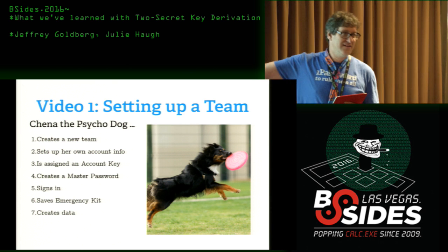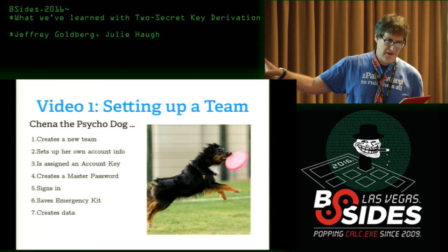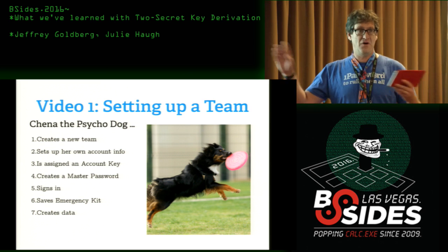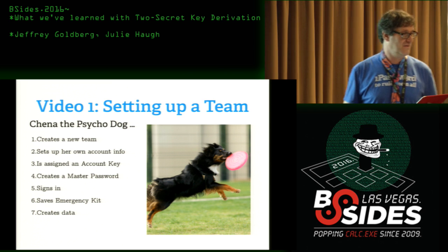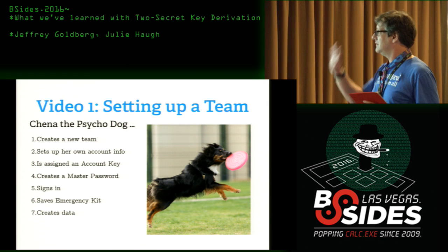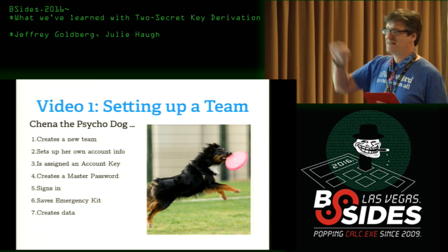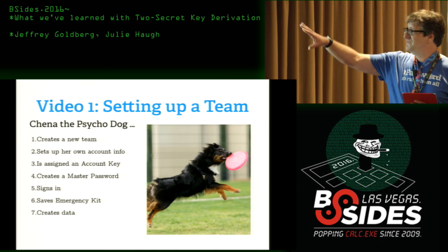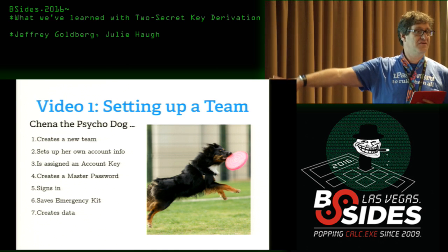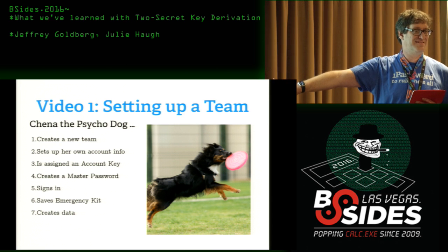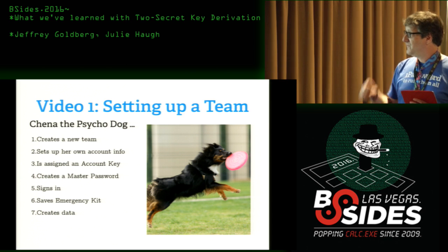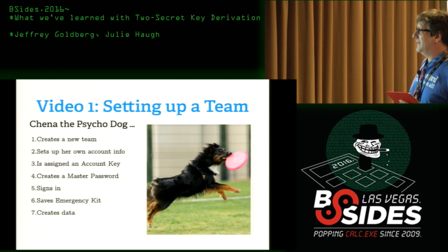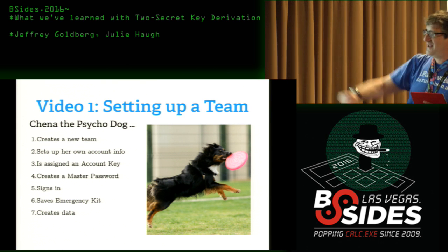Chena the Psycho Dog — she's really sweet, except for when she isn't. Catches frisbees and balls; we have no idea who trained her to do this. She's going to be our team leader. What you're going to see is a video showing a first sign-up for 1Password for Teams, and we're just going to go through a lot of steps here.